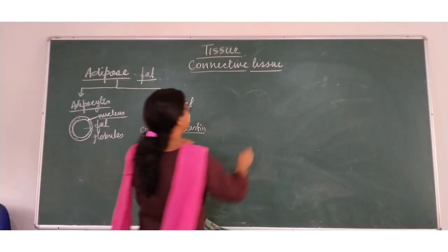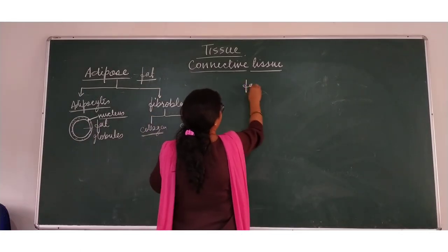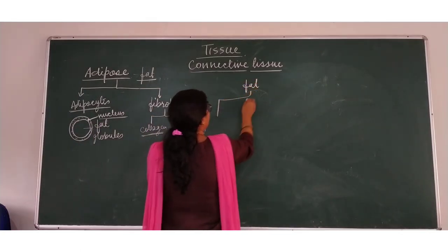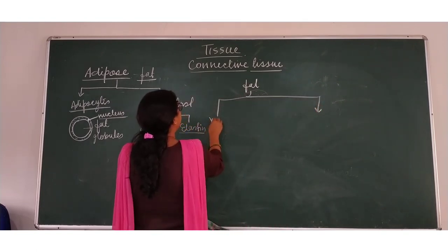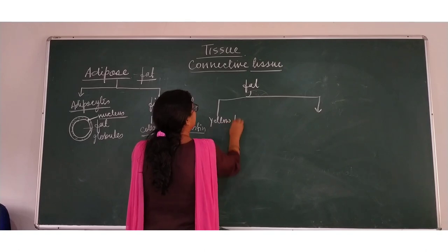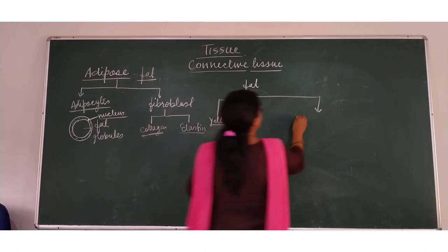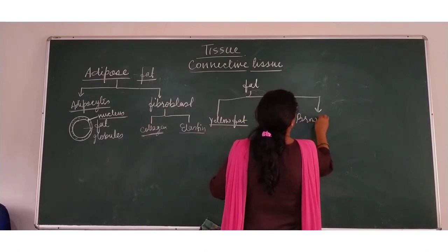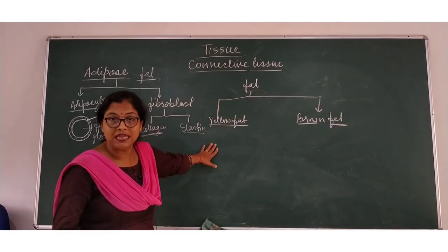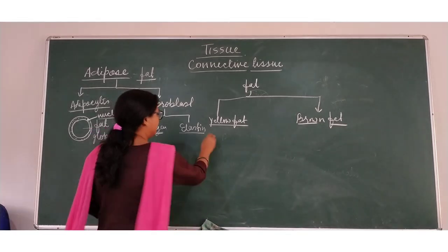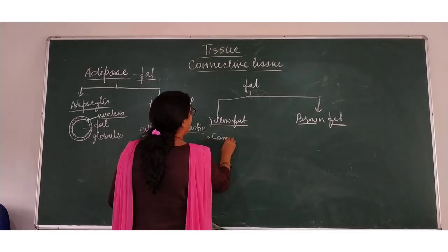Now in adipose tissue two types of fats are found. The first one is yellow fat and the second one is brown fat. This yellow fat is common, very common.